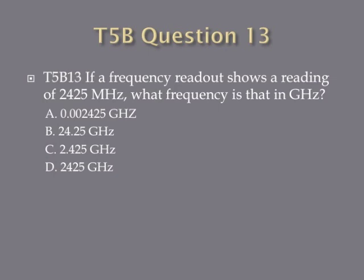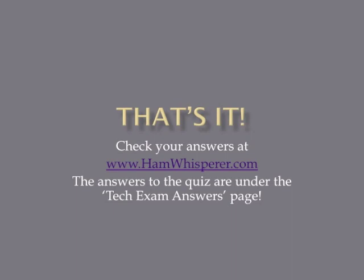Question 13: If a frequency readout shows a reading of 2,425 megahertz, what frequency is that in gigahertz? A) 0.002425 gigahertz, B) 24.25 gigahertz, C) 2.425 gigahertz, or D) 2,425 gigahertz? That's it for the T5B lesson. Be sure to go to hamwhisperer.com and check your answers at the exam answers page under the T5B link. Until next time in Lesson 17, this is Andy, KE4GKP, saying 73 — I hope to hear you on the air soon.